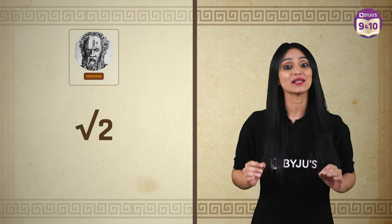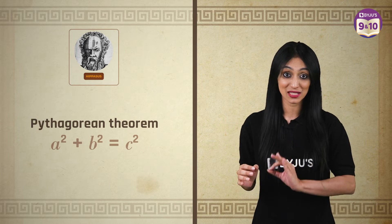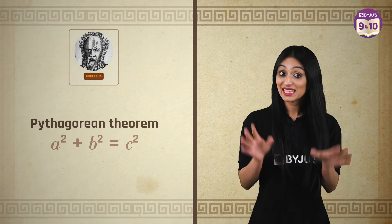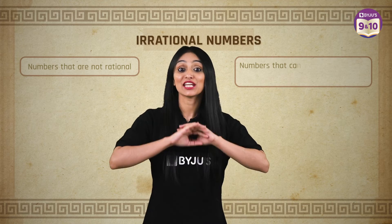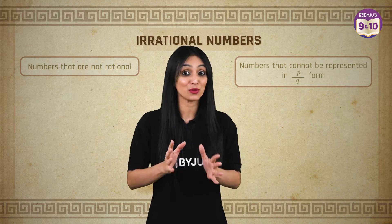This can be shown using the famous Pythagorean theorem of a square plus b square equals c square. This incident introduced us to irrational numbers. Numbers that are not rational. Numbers that cannot be represented in P by Q form.